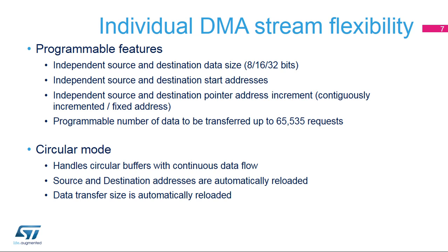For each channel, the source and destination data size format is independently configurable for 8, 16, or 32-bit packets. The source and destination addresses and pointer increment are also independently configurable. The transfer data size can be pre-programmed up to 65535 bytes. Circular buffer mode is available to support a continuous flow of data — the source and destination addresses and the number of data to be transferred are automatically reloaded after the transfer completes.